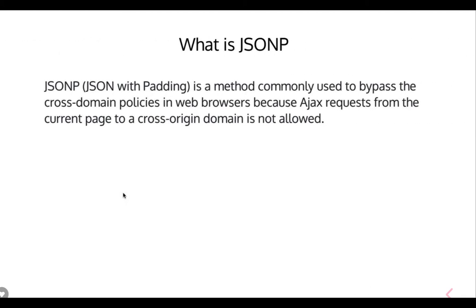What is JSONP? JSONP is a method completely used to bypass the cross-origin policies in the web browser, because Ajax requests follow the cross-origin policy — if your frontend is on origin X, it cannot get data from origin Y. This is a browser restriction, and it will be overridden only if you send the appropriate headers from the APIs or backend. Another option is to use JSONP to override the cross-domain policies and allow your browser to talk to a cross-domain. That's it — in the next video we will cover more questions.